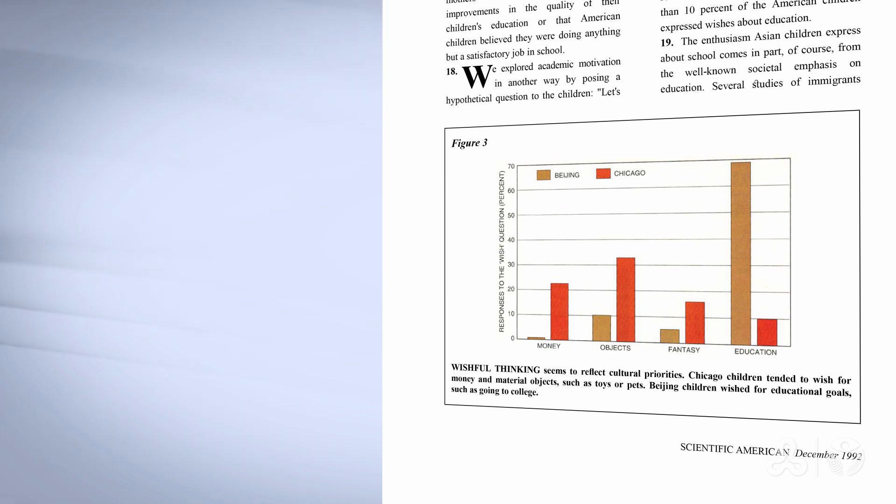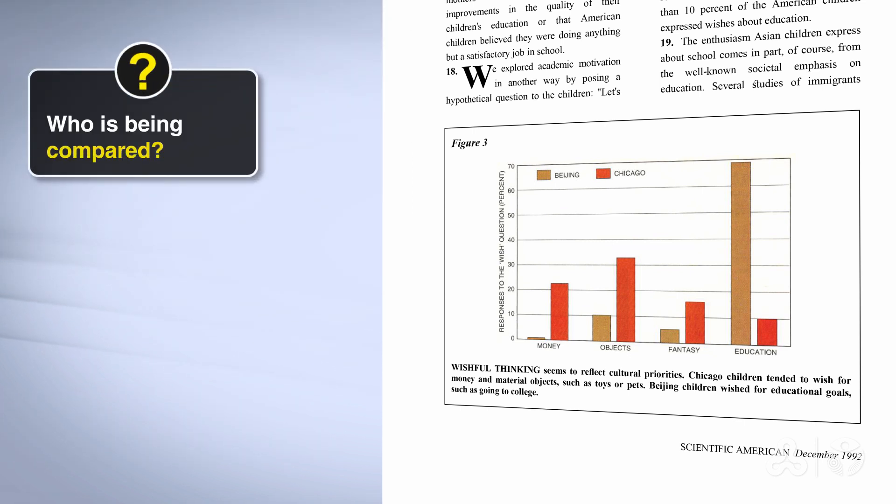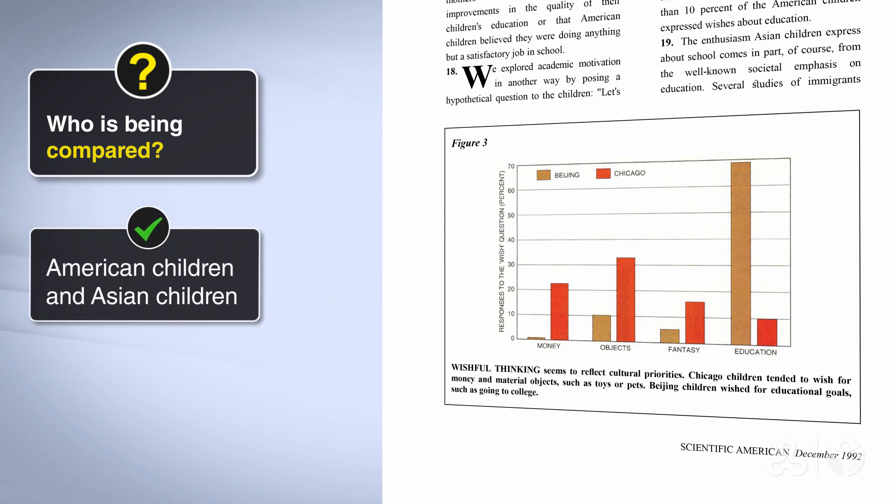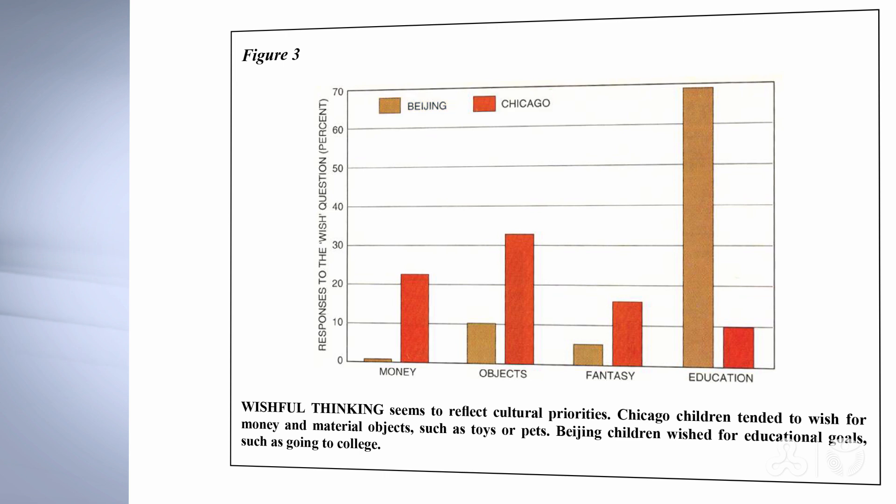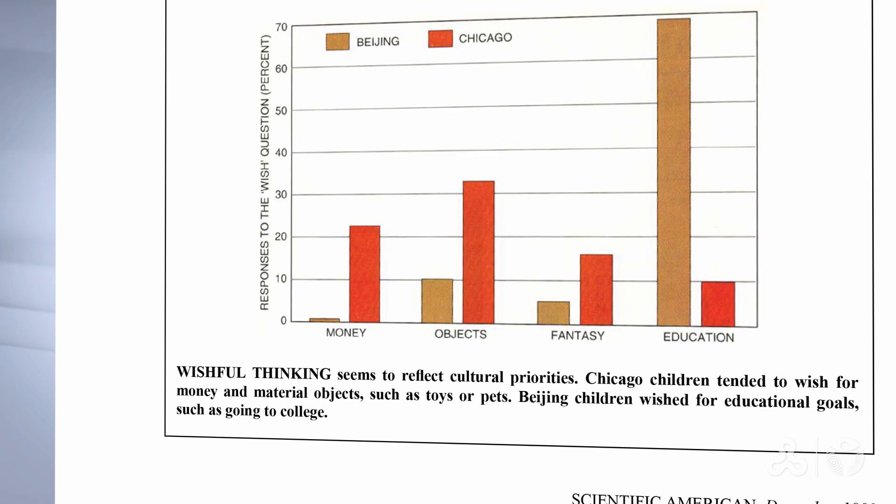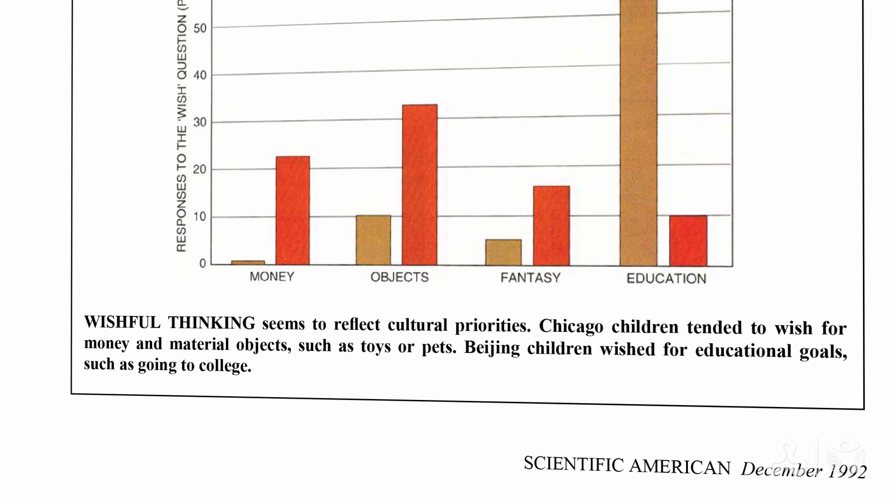Now, let's answer. First of all, who are we comparing? Well, obviously, we're still with Americans and Asians. Let's look at the cities. We're talking about Beijing and Chicago in the graph. And under the graph in the explanations, we see that we're talking about Chicago children and Beijing children.